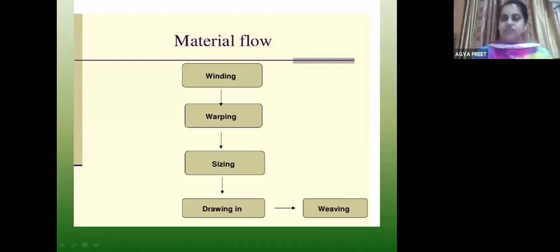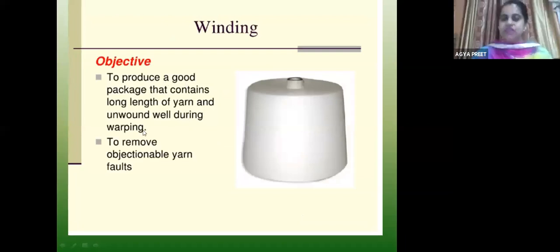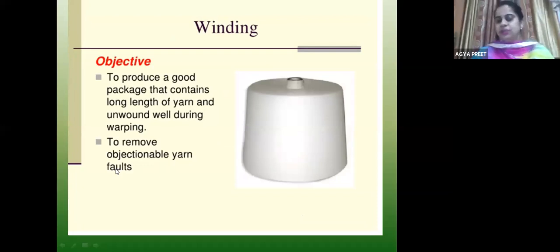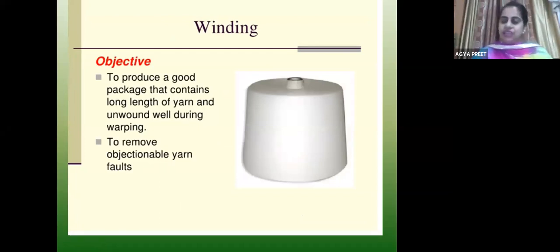Starting with the winding process: winding produces a good package that contains a long length of yarn and can be unwound during warping. We have to make this package in a good way to store yarn in large quantities to be used for warping, and to remove objectionable faults — thick and thin places, neps — from the yarns, so that your fabric will be good.